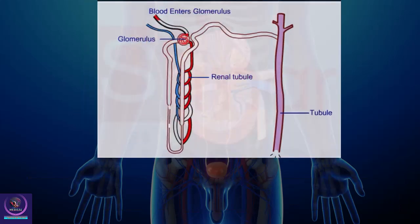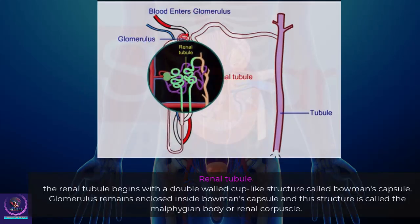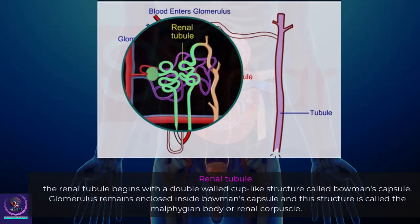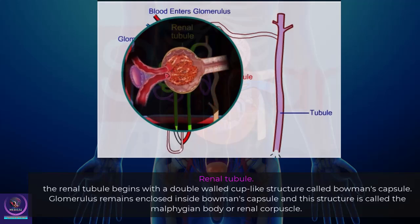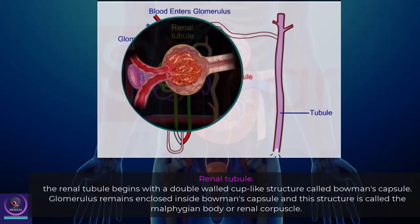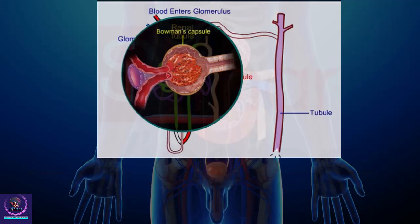The renal tubule begins with a double-walled cup-like structure called Bowman's capsule. The glomerulus remains enclosed inside Bowman's capsule, and this structure is called the Malpighian body or renal corpuscle.